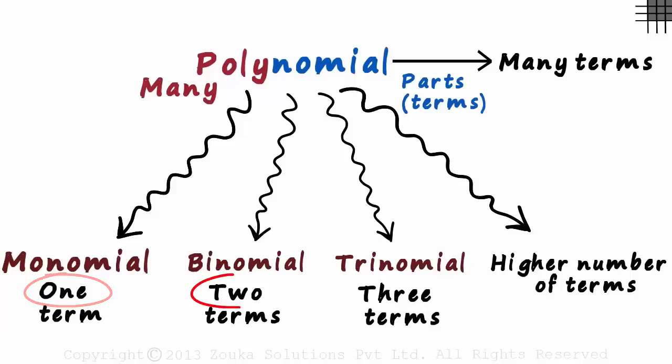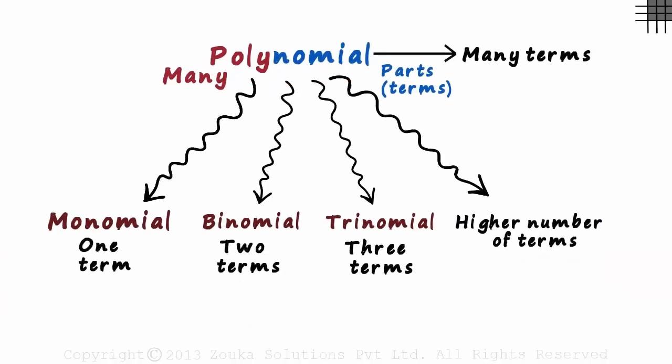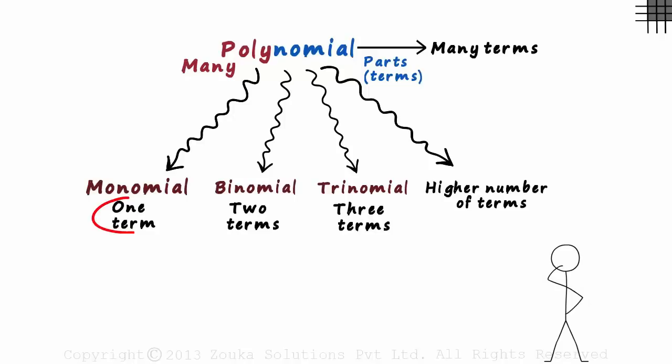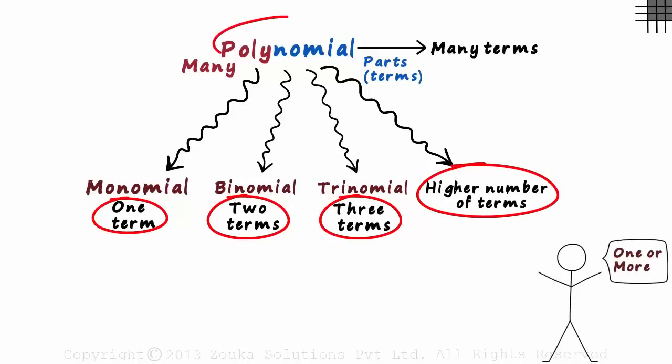Mono is one, bi is two and tri is three. There is a common misconception that only an expression with more than three terms is called a polynomial. That's incorrect. All expressions which have one or more terms are called polynomials.